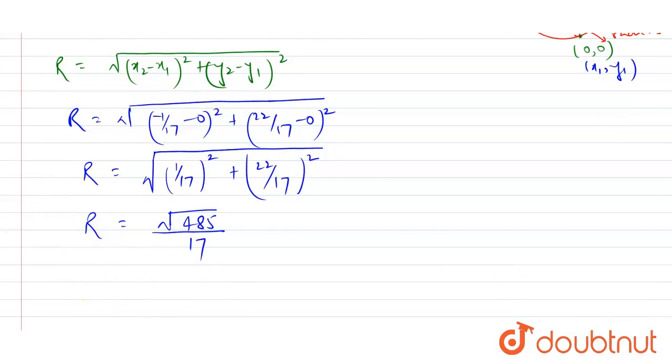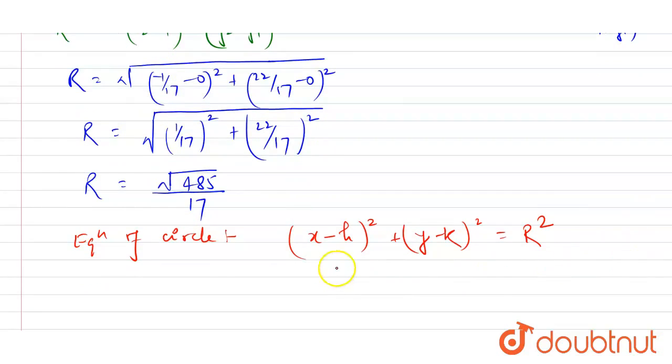And now if I talk about the equation of circle, this is given by (x-h)² + (y-k)² = r², where h is the x coordinate of the center, k is the y coordinate of the center, and r is the radius of the circle.